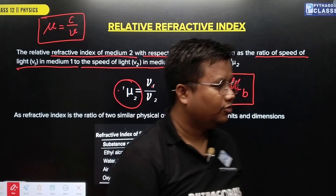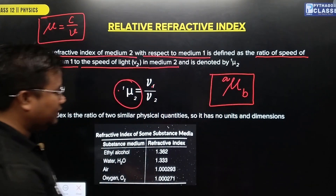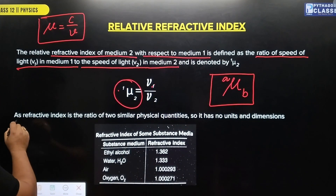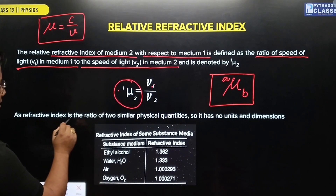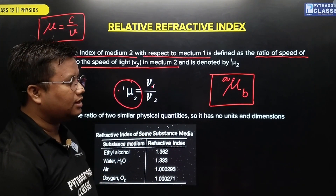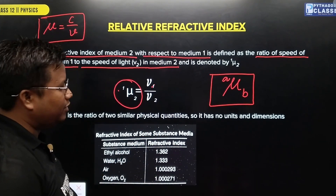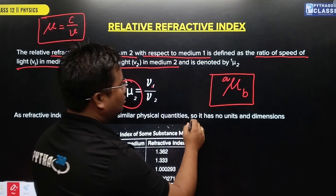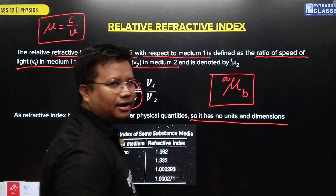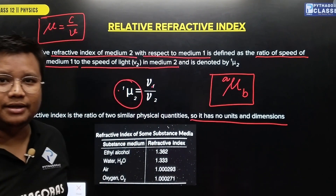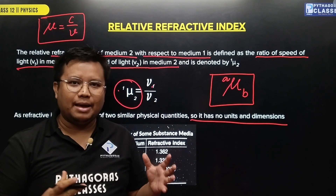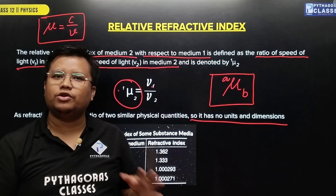This is the relative refractive index of medium 2. Since the refractive index is the ratio of similar physical quantities, it has no unit and no dimensions — it is not a dimension or a unit.